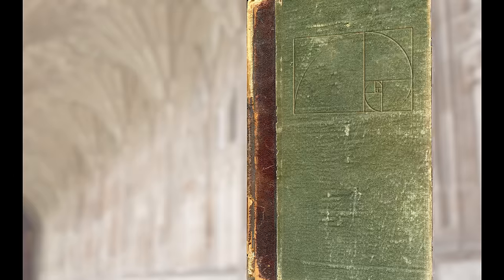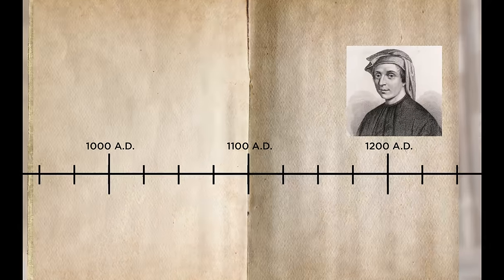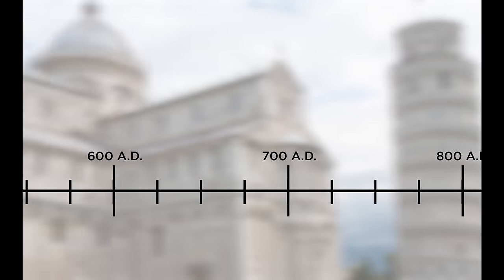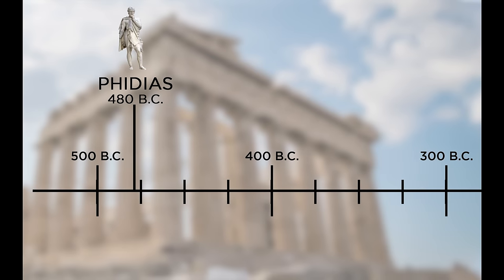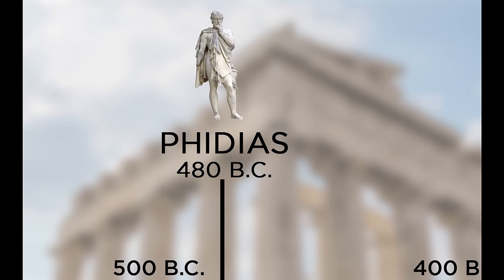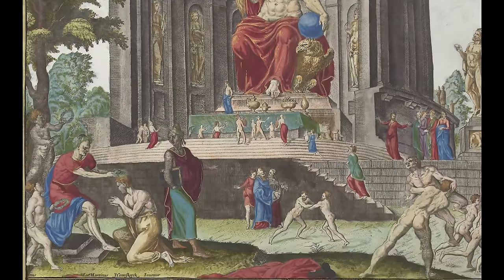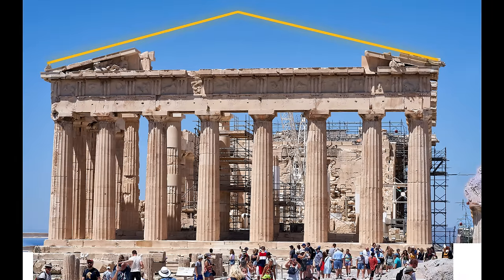The history of the golden ratio goes back far beyond Fibonacci in the 1200s. In fact, it's believed that the ancient Greek sculptor Phidias used the golden ratio around 480 BC when he sculpted the statue of Zeus at Olympia. And check out how the ratio is used at the Parthenon.